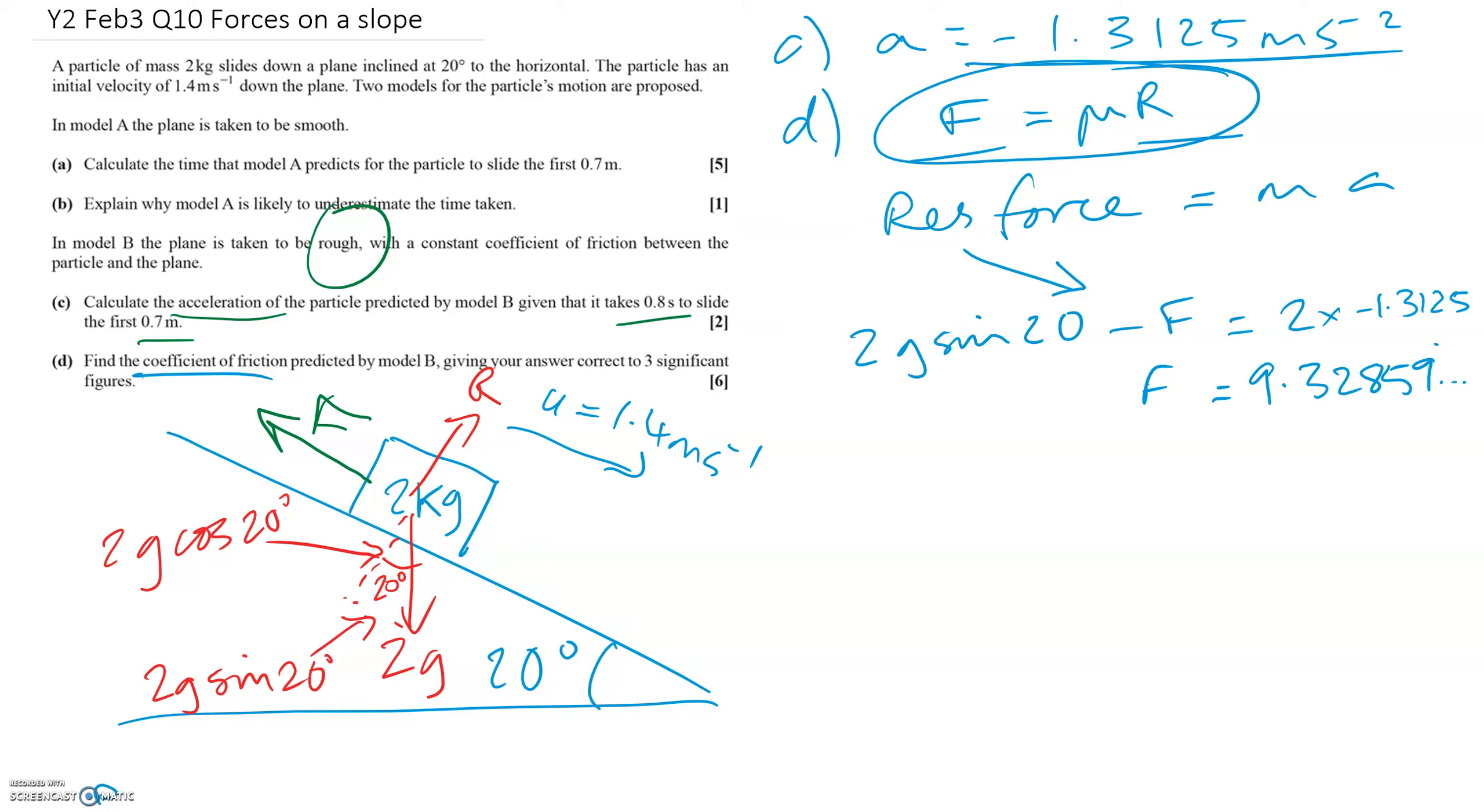To find R, we're going to need to resolve perpendicular to slope in that direction. So resultant force equals ma again. Now there is no resultant force. It's not accelerating in this direction. So there will be no acceleration. So the forces going up, which is R, will equal the forces going down, which is 2g cos 20. So that equals zero. So we could have just written R equals 2g cos 20 from the start. Because these two forces are going to be equal. They cancel each other out. So now we know F. Now we know R.